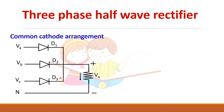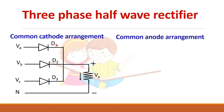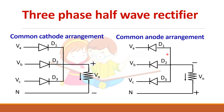In this structure the cathode of each diode is connected together, so it is called a common cathode arrangement. It can also be connected in another way called a common anode arrangement, in which the anodes of the diodes are connected together. We will be looking at the common cathode arrangement in this video.